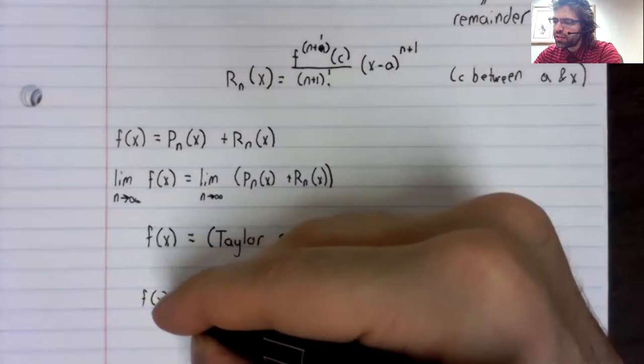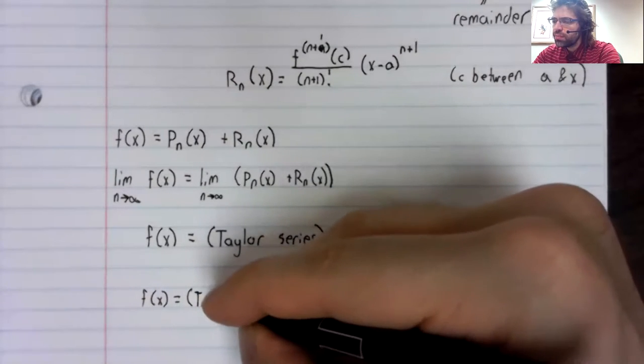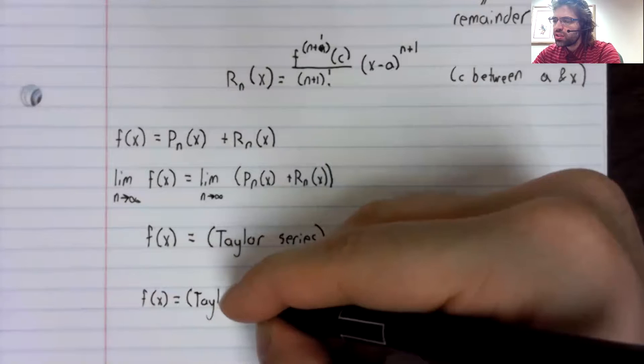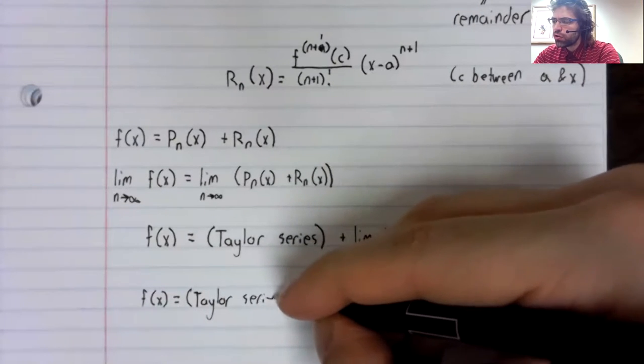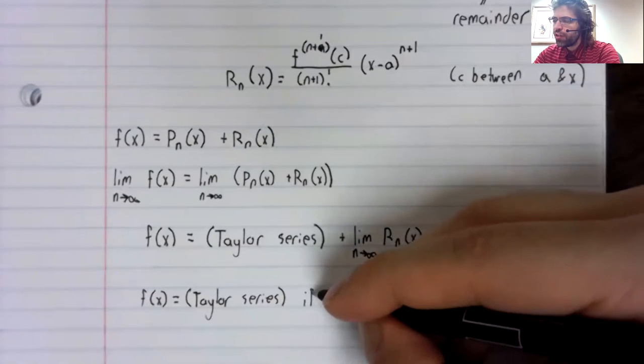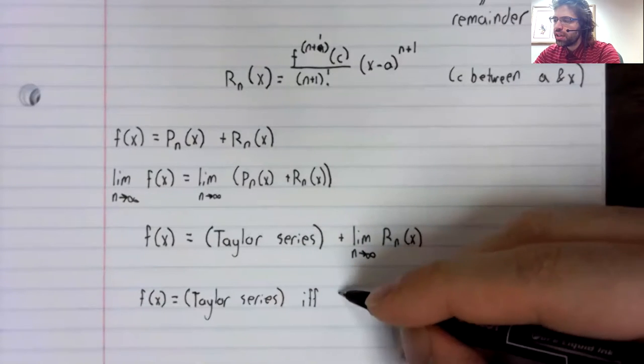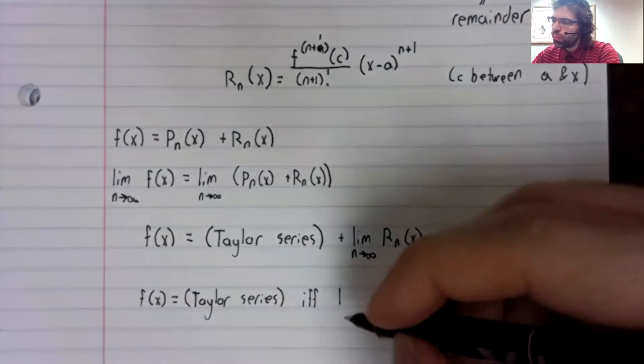That f of x equals its Taylor series if and only if this goes away.